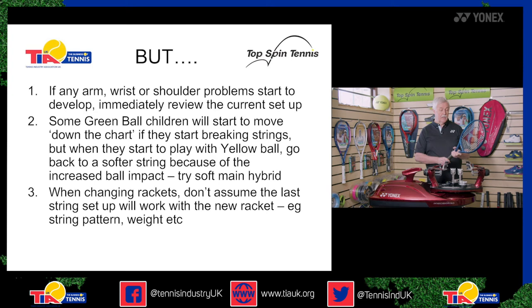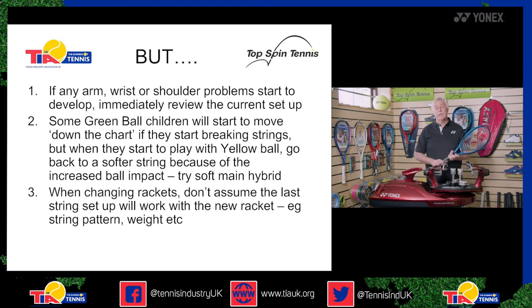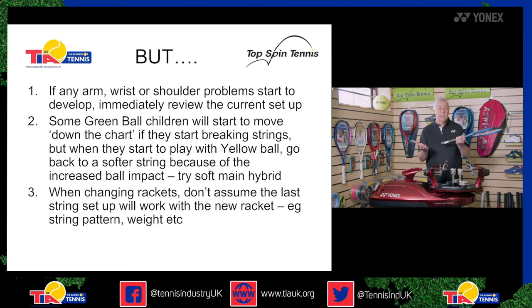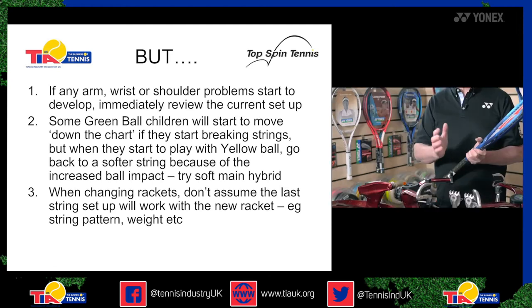We've also noticed that some green ball kids who start breaking a few strings tend to move to a more durable string. But when they start playing yellow ball, the impact is significantly different from a green ball. So you should go back to using a very soft string when transitioning to yellow ball. If they have two rackets, it's a good idea to have one strung for green ball and one for yellow ball, especially to prevent injuries when moving to a harder ball.